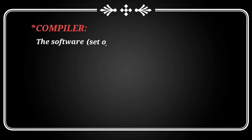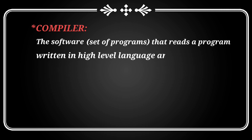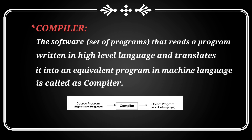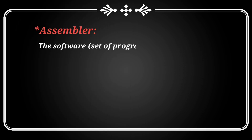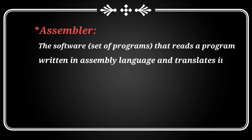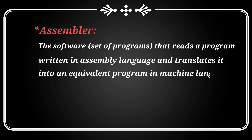Compiler and assembler. Compiler — a set of programs that reads a program written in high-level language and translates it into an equivalent program in machine language is called a compiler. Assembler — a set of programs that reads a program written in assembly language and translates it into an equivalent program in machine language is called an assembler.